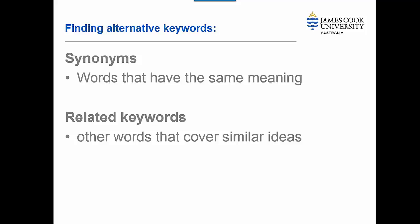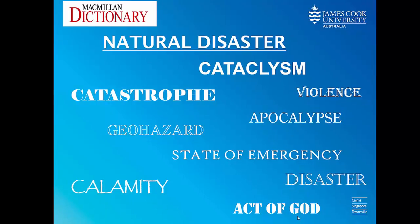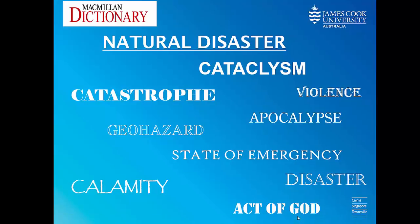For example, if we look up synonyms for 'natural disasters' in a thesaurus, we see terms such as catastrophe, apocalypse, cataclysm, disaster, and act of God. As well as these synonyms, there are many types of natural disasters and we need to identify these as well, such as those mentioned in the context of this assignment topic.